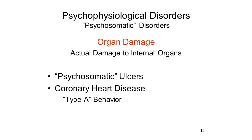Perhaps the classic example of a psychophysiological disorder are so-called psychosomatic ulcers. Not all ulcers are psychosomatic in nature, but there are some gastric ulcers that occur in the context of high levels of psychological stress. And because they're presumably caused by the stress in some way, they're labeled as psychosomatic. Another psychosomatic disorder commonly encountered is coronary heart disease, which sometimes seems to be closely related to the patient's personality and patterns of behavior.